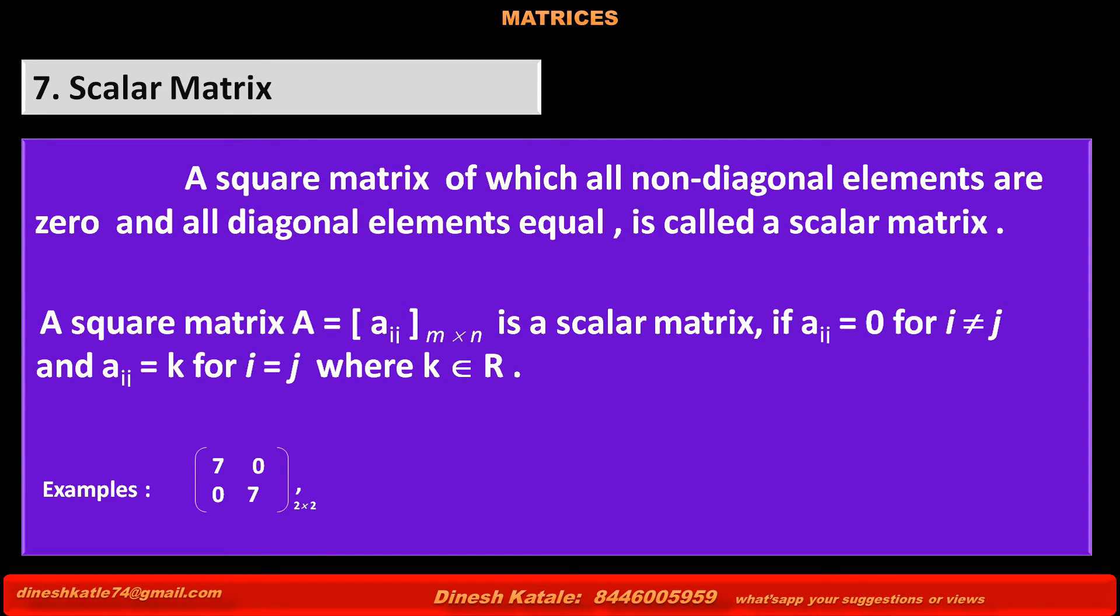Examples: In first matrix, non-diagonal elements are zero and diagonal elements are equal, each one is equal to seven, so it is a scalar matrix.